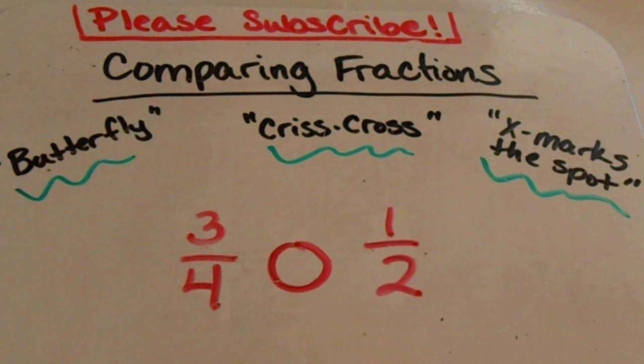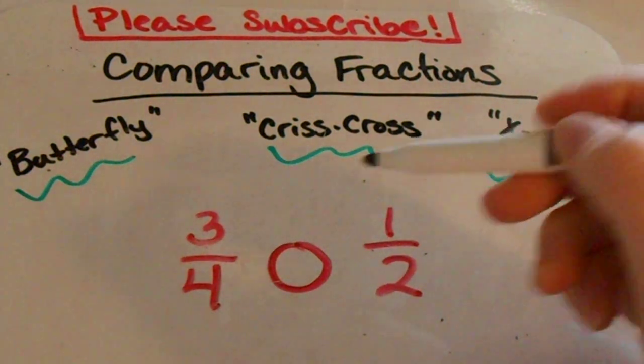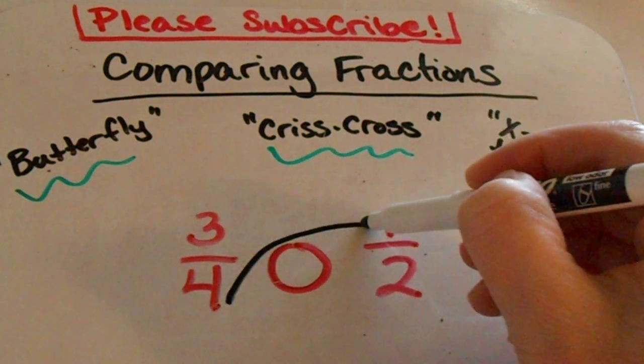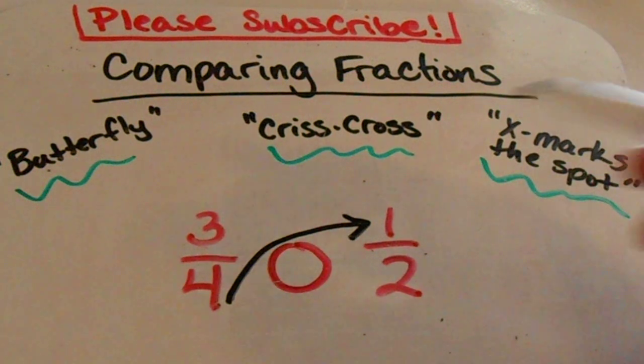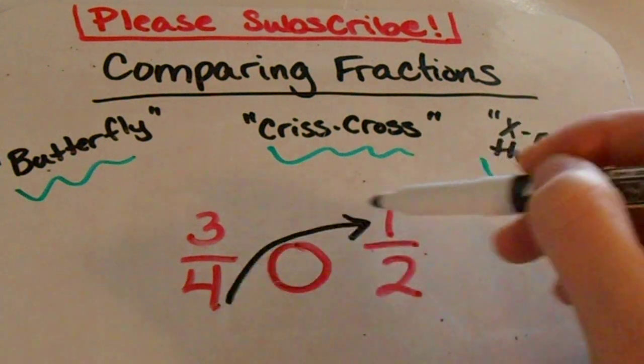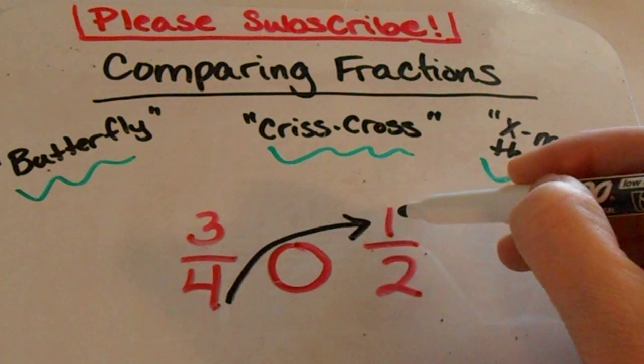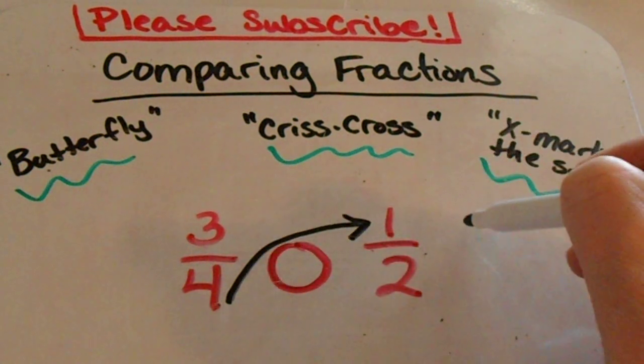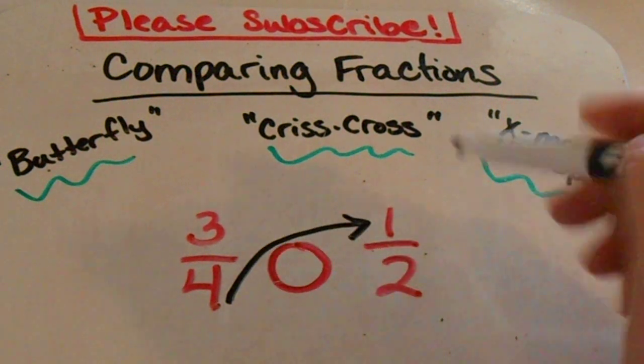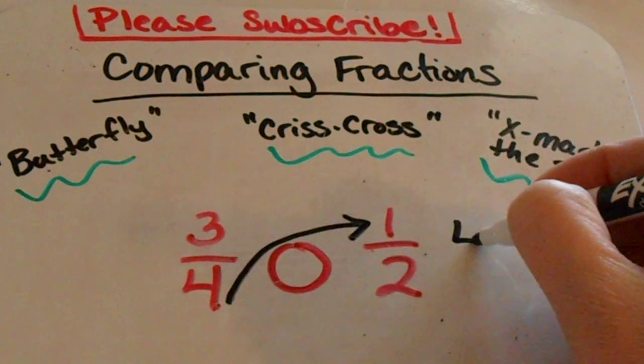So here we go, let's try it with the first fraction. I picked a couple really simple fractions to show you the first example. What we're going to do is we're always going to start with the bottom number and we're actually going to cross over to the top number and I'm going to draw an arrow like that. So what I'm going to do with these two numbers is I'm going to multiply them, four times one, and I draw the arrow this way to let me know that I need to put my product of that four times one over here on this side. So four times one is four.